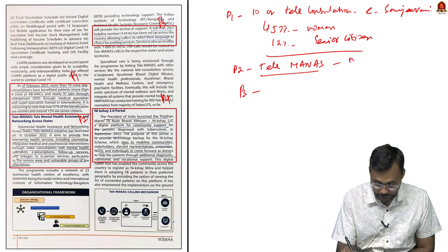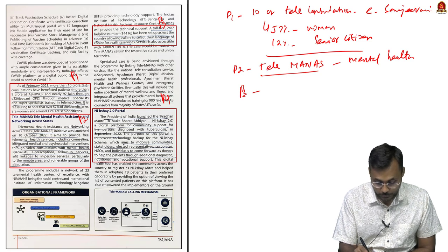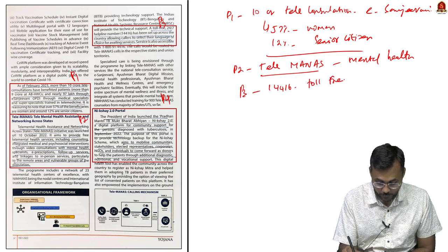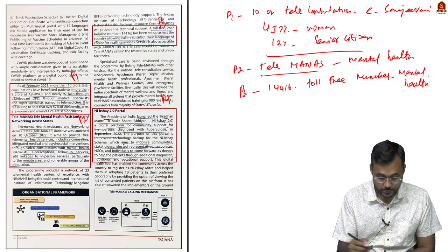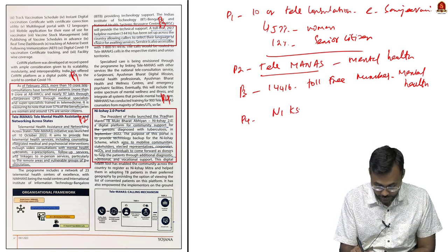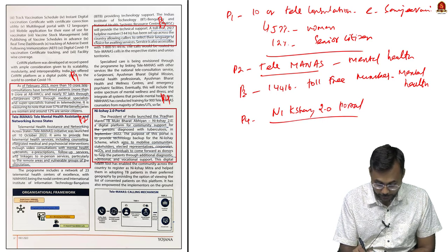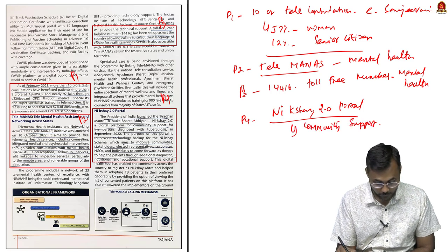Paragraph 3 mentions a toll-free number 14416 related to mental health, which can be accessed by individuals. Paragraph 4 speaks about the Nikshay 2.0 portal, which focuses on community support for TB patients — where individuals, corporates, or NGOs can take care of TB patients through this portal.